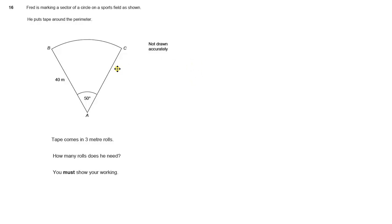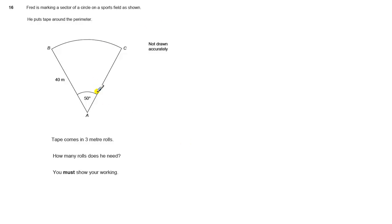Here we have question 16, where we have a question about a sector of a circle. The context is that Fred is marking a sector of a circle on a sports field. He puts tape around the perimeter. We know the tape comes in 3 metre rolls — how many rolls do we need? He must show working, so we need to work out the distance around this shape.